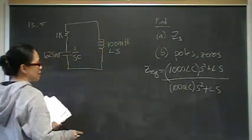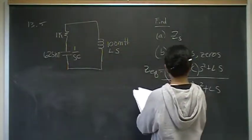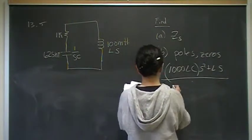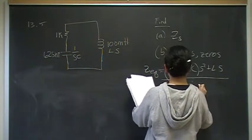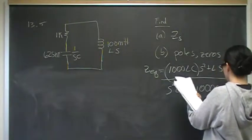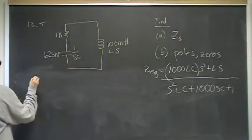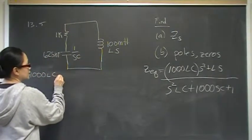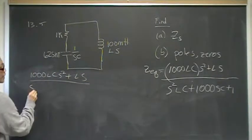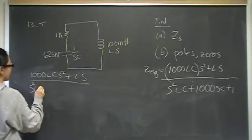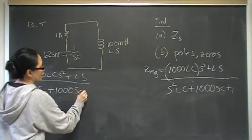Oh, silly me. I copied it over wrong. Okay. So, in the numerator, the numerator should have been S squared Lc plus 1,000 Sc plus 1. So, now we're going to divide. We have 1,000 Lcs squared plus Ls over s squared Lc plus 1,000 Sc plus 1.